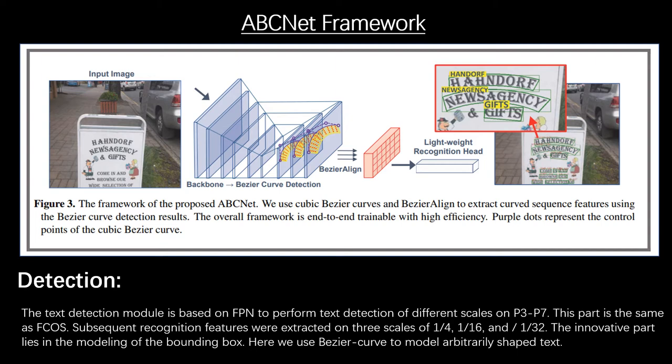The text detection module performs text detection following FCOS. Subsequent recognition features are extracted in three scales. The main innovation lies in modeling of the bounding box. Here, as mentioned earlier, we use Bezier curve to model arbitrary shape text.